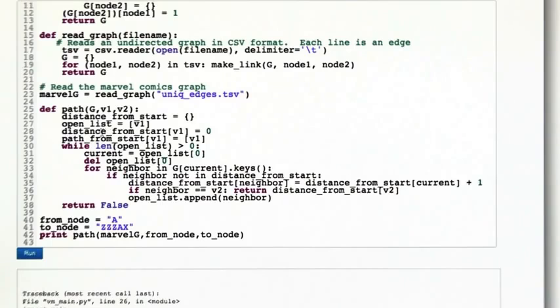Then we've got a subroutine called path GV1V2. What that does is it takes a graph G, a start node, say a character in the comic book, and an ending node, another character in the comic book, and it tries to find the shortest path between them. In fact, it will unless there isn't one.